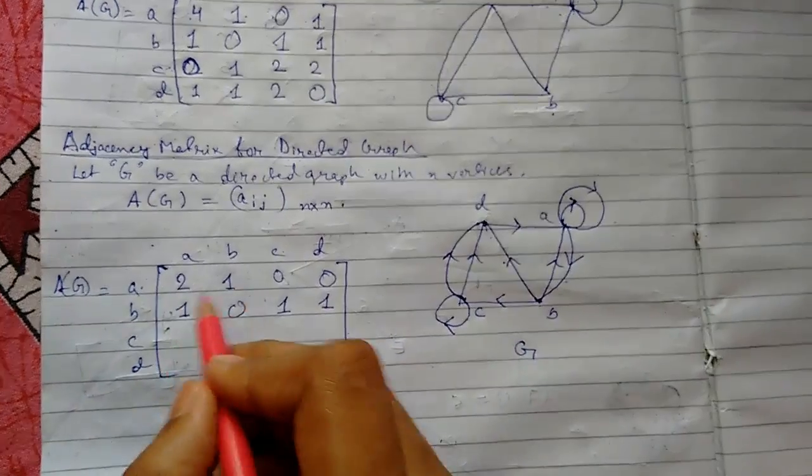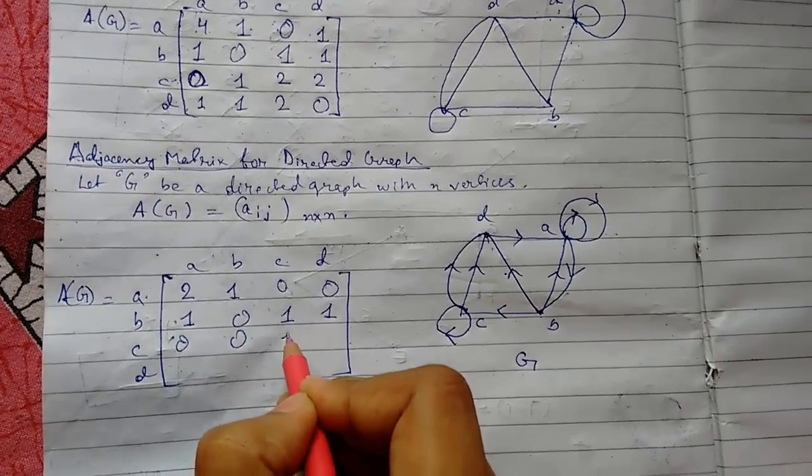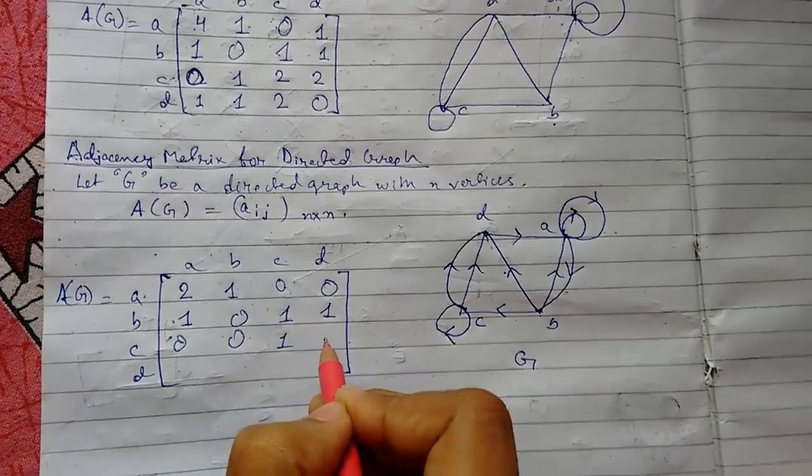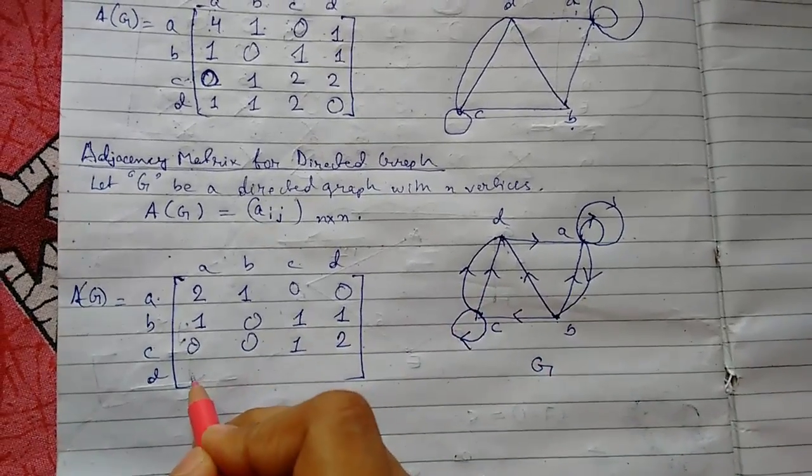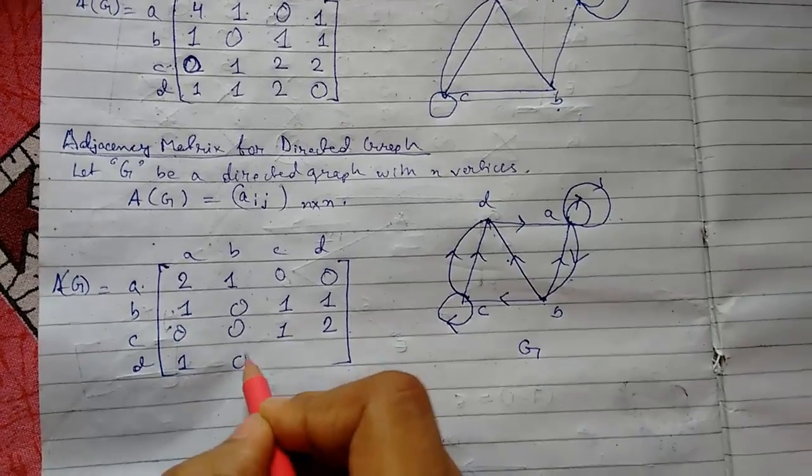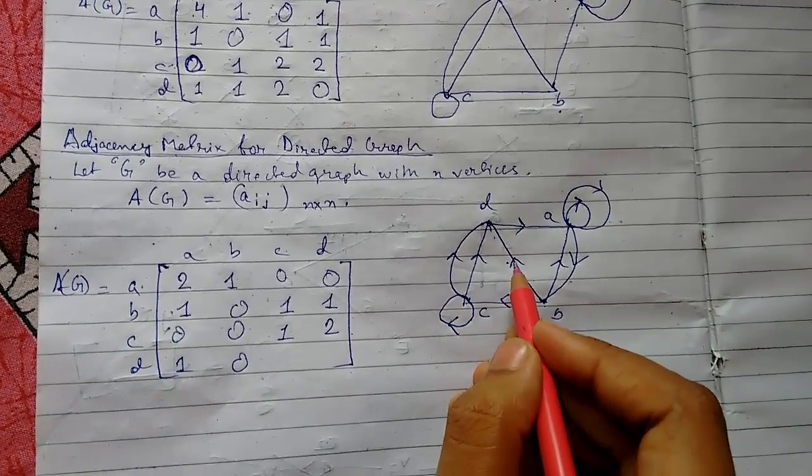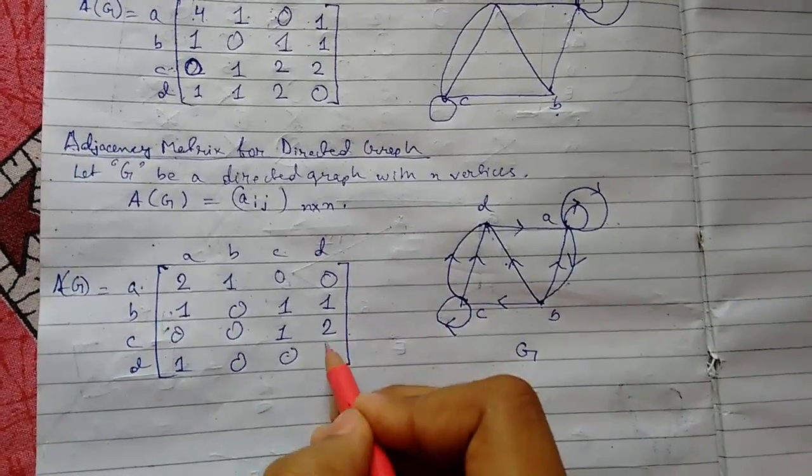Now c to a, zero. This will be one. c to c is one, c to d is two, two paths are there. d to a is one, d to b is zero because it is considered direction, d to c is also zero, d to d is zero.